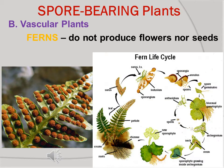There are also vascular plants that are considered spore-bearing plants. The commonly known examples are the ferns, which do not produce flowers nor seeds, like the bryophytes. Ferns reproduce through spores. They have leaves, stems, and roots.